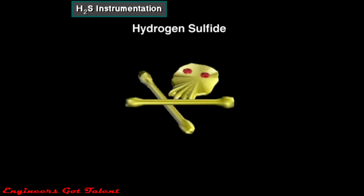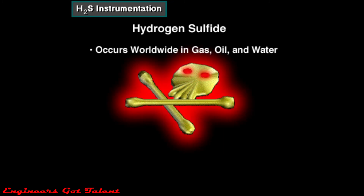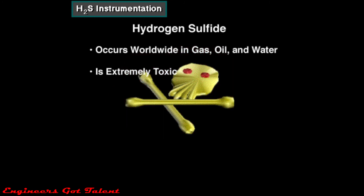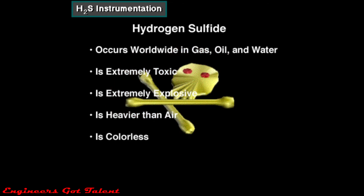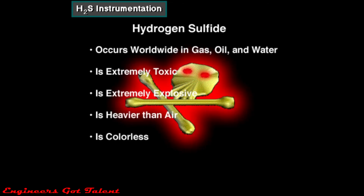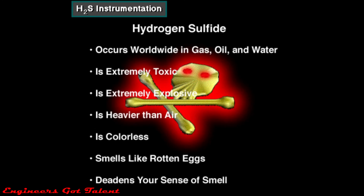Hydrogen sulfide, H2S, or sour gas, is the most poisonous gas encountered in drilling operations. It occurs worldwide in various concentrations associated with gas, oil, and water produced from wells. It is extremely toxic, explosive, and heavier than air. It is also colorless, so you cannot see it. In low concentrations, it smells like rotten eggs, but you cannot depend on your sense of smell to escape harm — H2S quickly deadens your ability to smell.